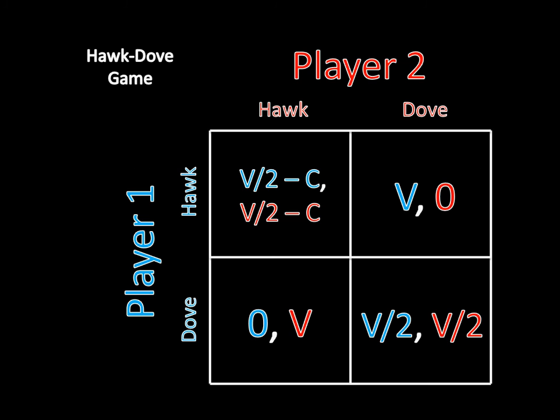We've been talking a lot about this hawk-dove game lately. The idea here was that two individuals, whether they be humans or even animals, are involved in a conflict over some good valued at V. They can choose a war-like hawk stance or a peace-like dove stance, and if they both choose the hawk stance, then they'll get into a war over this good, they'll both pay a cost C, and they'll essentially fight for it.